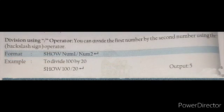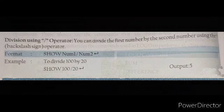Next is the division operator. You can divide the first number by the second number using the backslash operator sign. From the format, we can see that NUMBER1 — for example 100 — is divided by 20, and you get the output as the result.